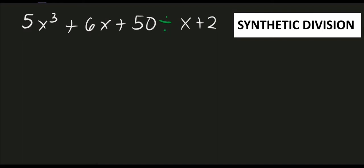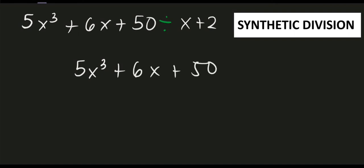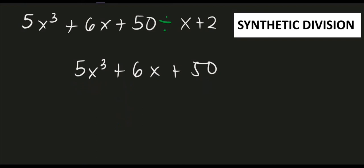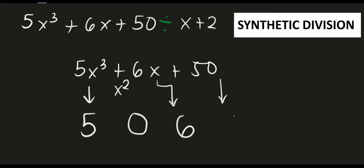Same procedure: first confirm the polynomial is in standard form, then extract the numerical coefficients. Observe that we have a missing term — there is no x squared term. We have the third degree term, we're missing second degree (x²), and we have the first degree and constant. When a term is missing, we assign zero as its coefficient. So the coefficients are: 5, 0, 6, and 50.